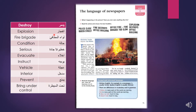Let's look at the vocabulary for this lesson: 'explosion' means infijar (انفجار), 'fire brigade' is the fire department, 'serious condition' means khatira (خطيرة), 'evacuate' means to clear out (إخلاء), and 'bring under control' means to contain something. Look at the picture — what's happening? You can see an explosion and a fire, and a fire brigade.